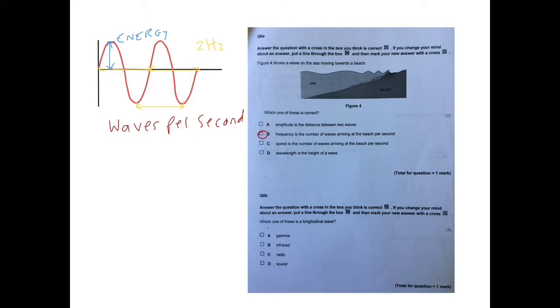Next, it's asking you to identify longitudinal waves. All electromagnetic waves are transverse, so gamma, infrared, radio, light, UV, they are all transverse waves.